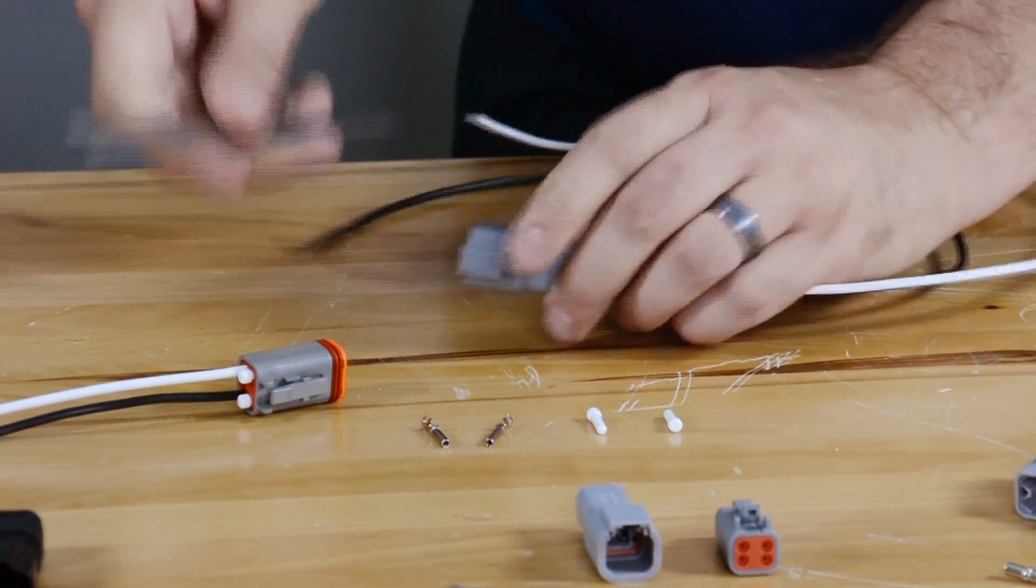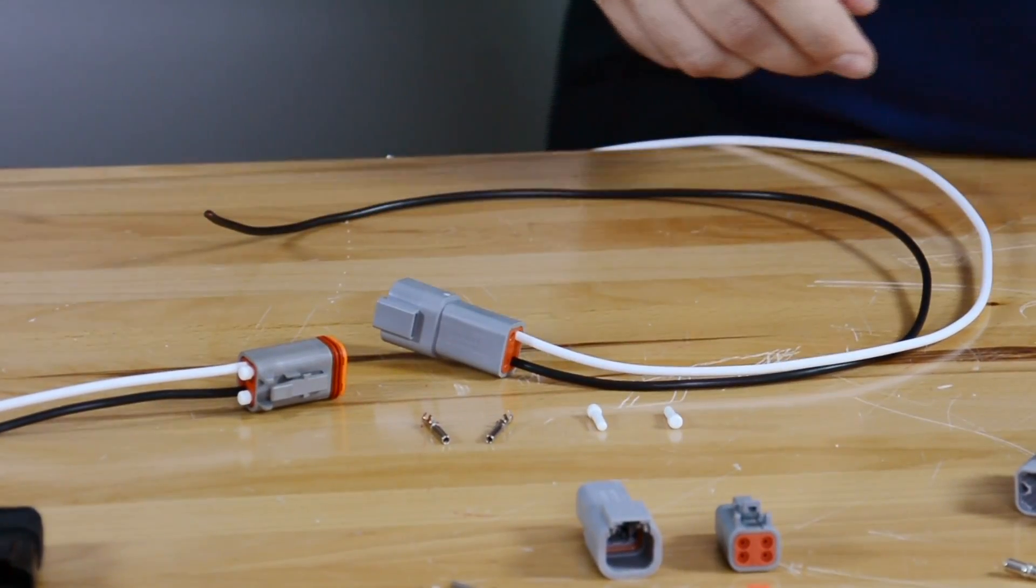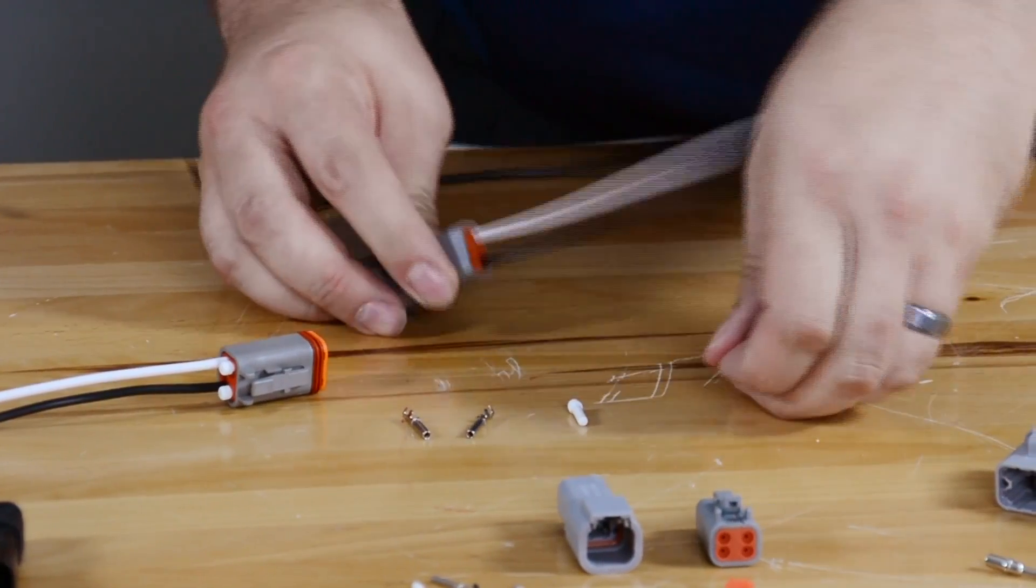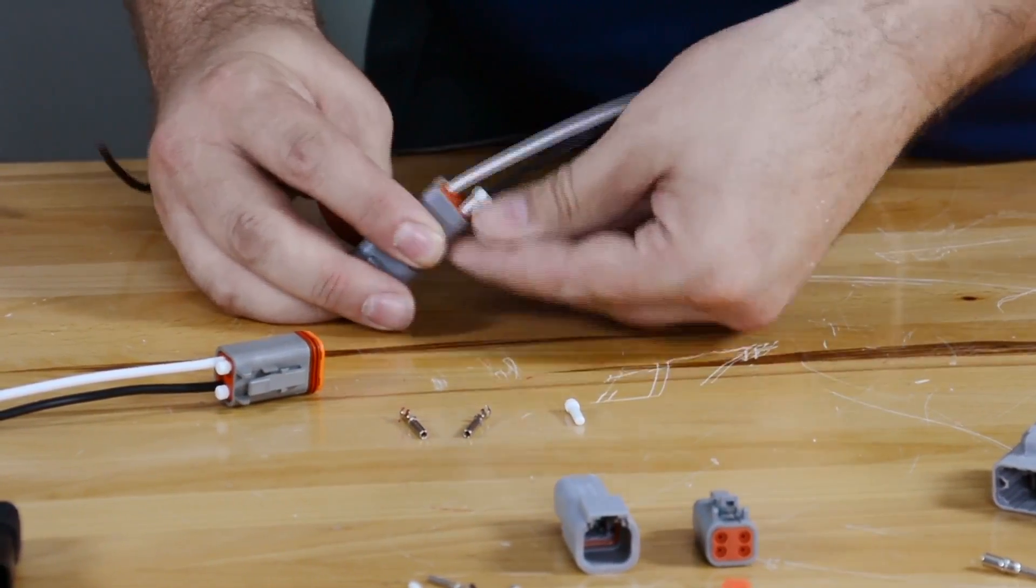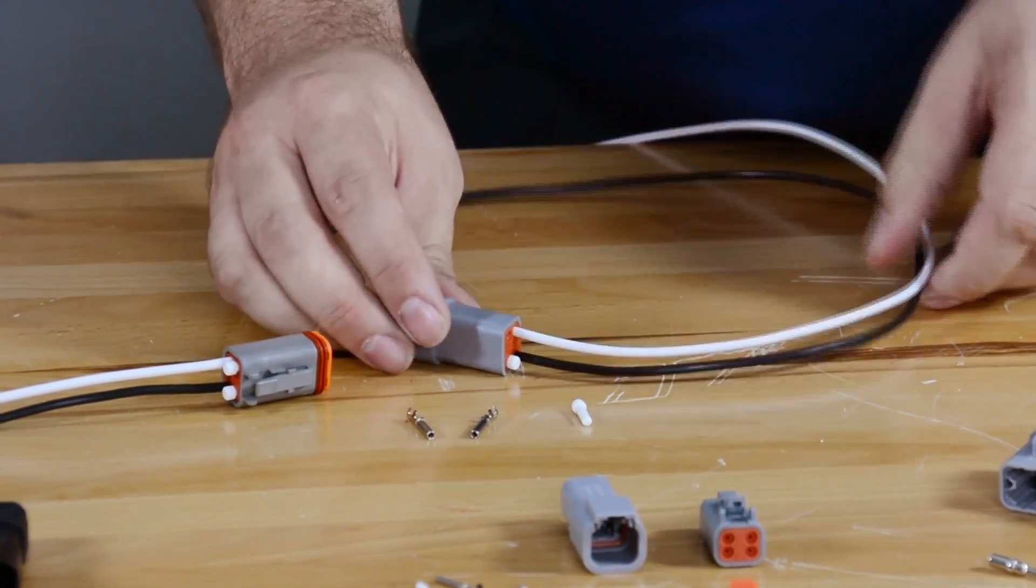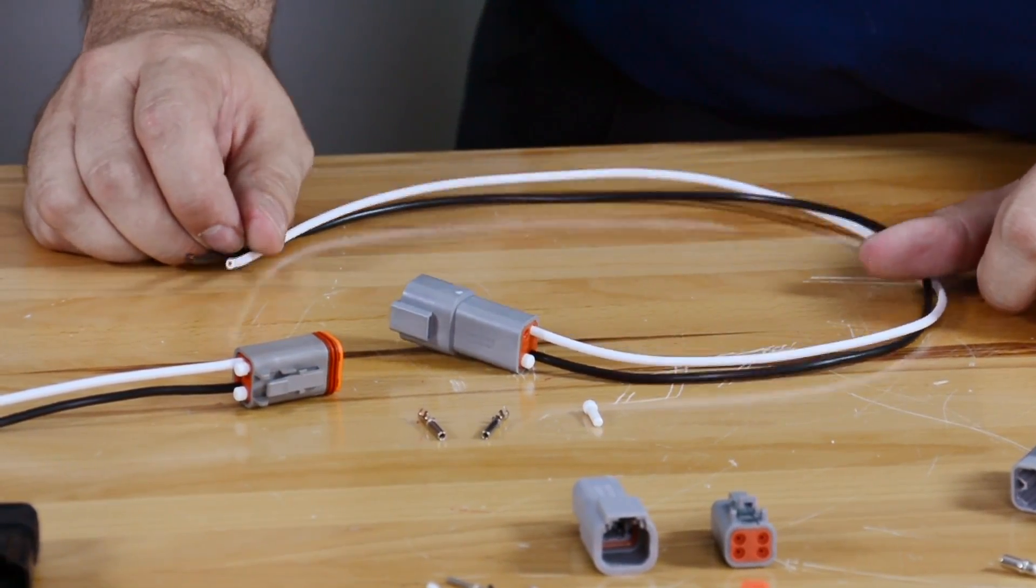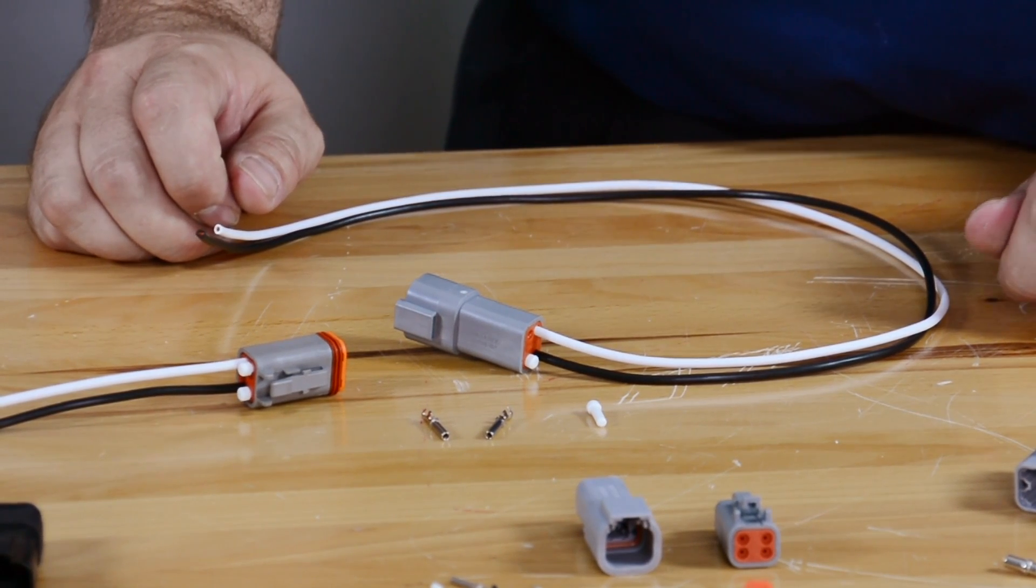But what really makes these two products so similar, like Scott had mentioned earlier, is the fact that the AT Series was developed to be completely compatible with Deutsch's DT Series. One of the only differences between the two series is price. The AT Series connectors can often be a very cost competitive alternative to the Deutsch DT Series.